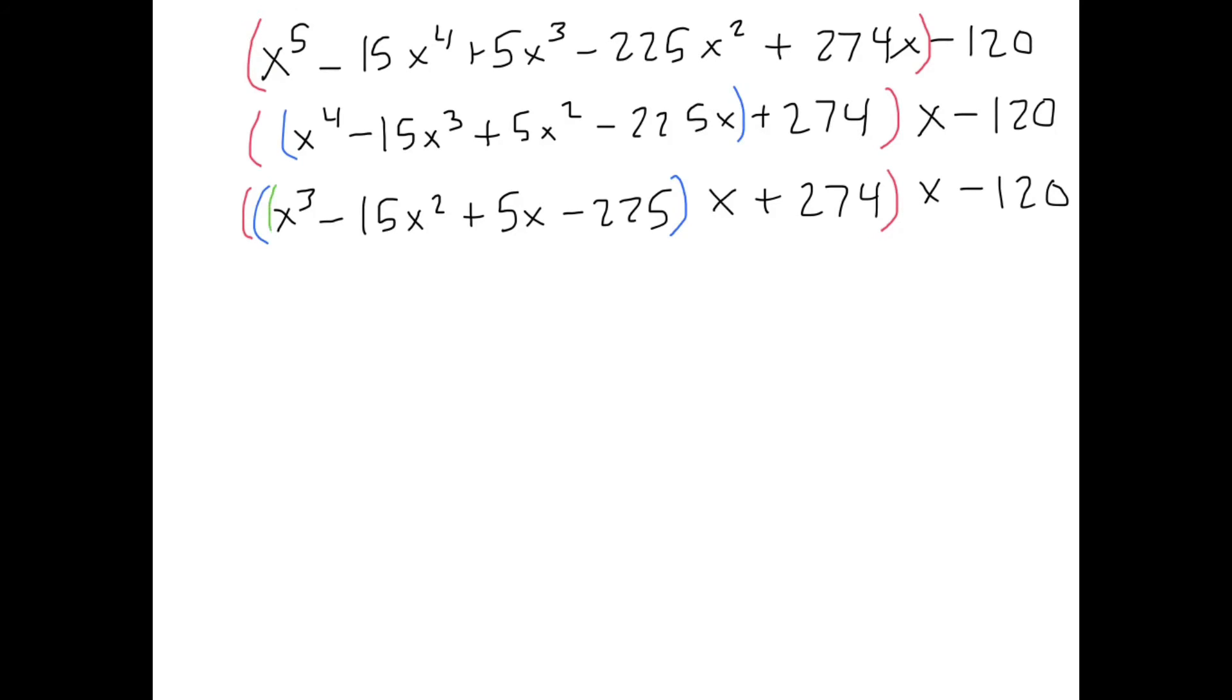So now look at these terms. Let's factor out an x. That will give us x squared minus 15x plus 5 times x minus 225, times x plus 274 times x minus 120.